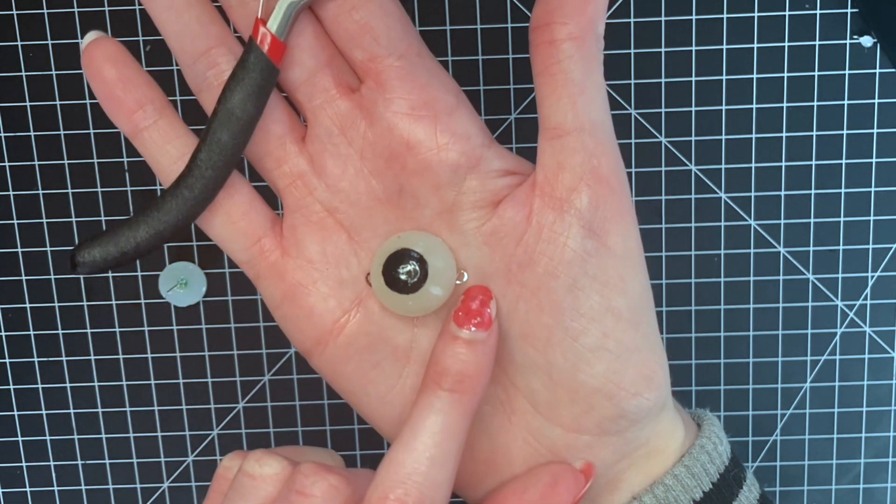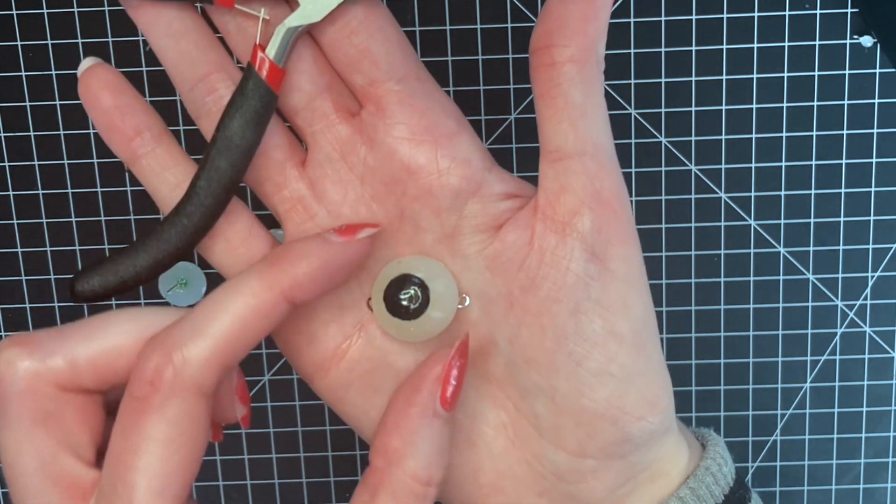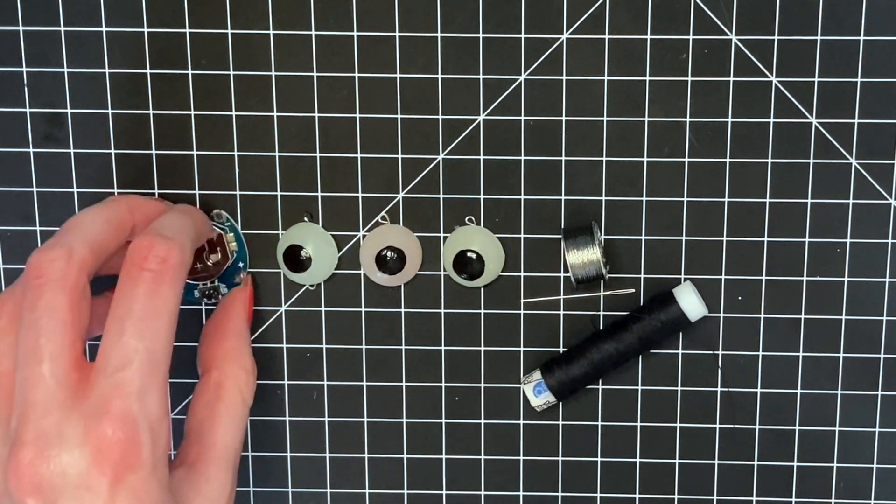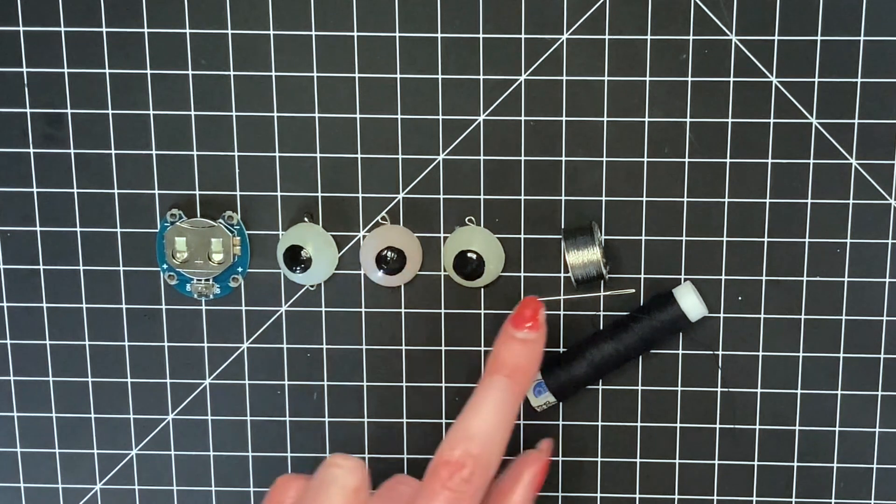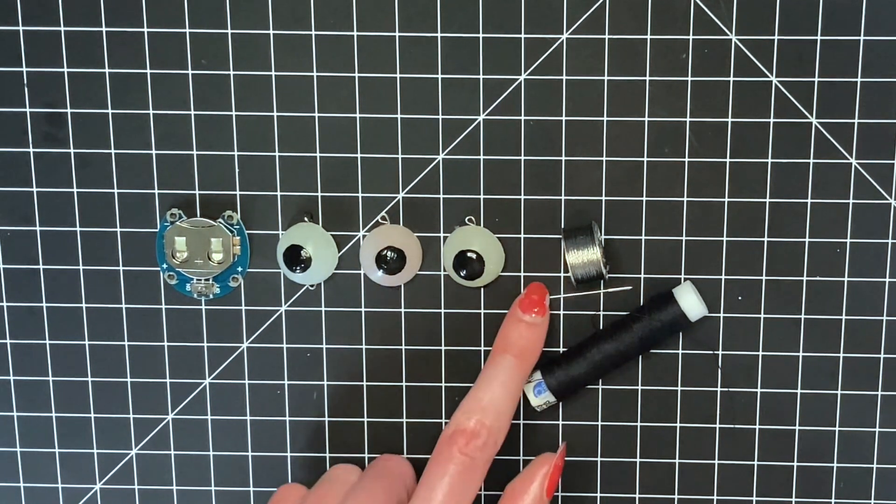Now all of that is done. Here are the components I am using to make the circuit. We have a Duino Tech power pad coin cell holder, our three LEDs, conductive thread, normal sewing thread, and a sewing needle.